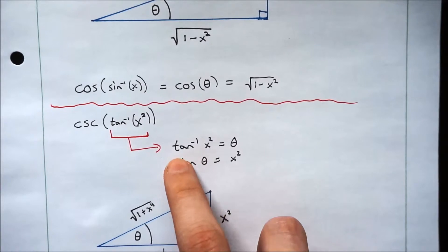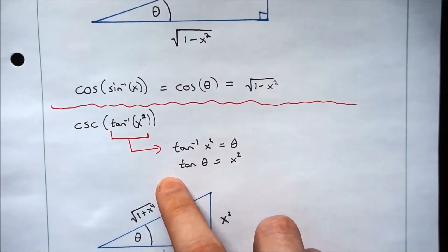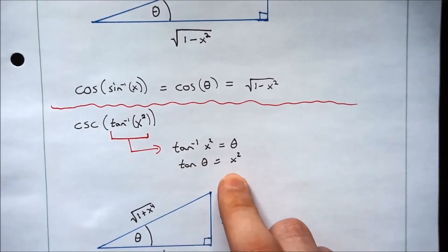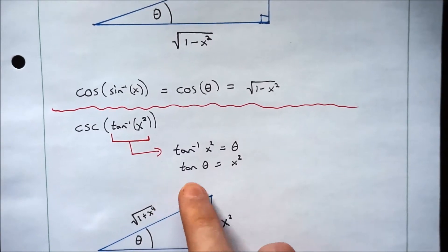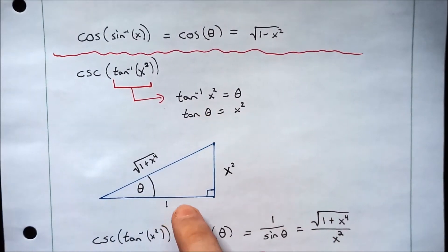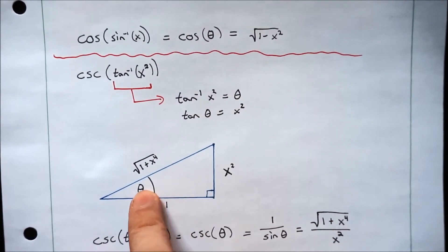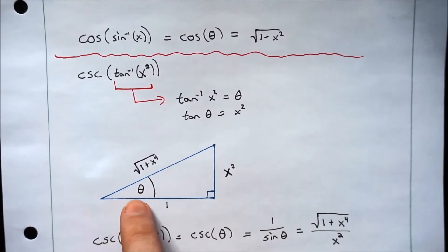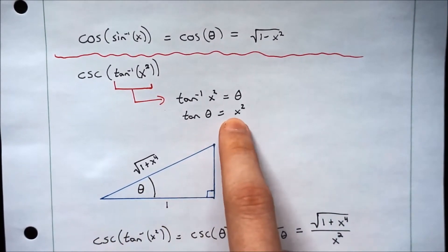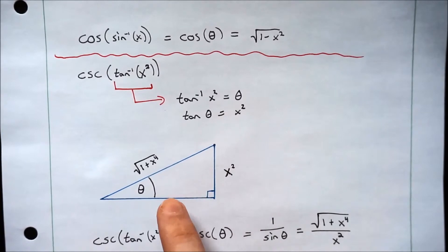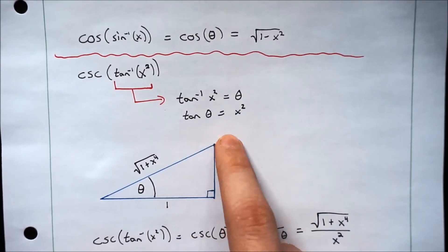So we have arc tangent of x squared is theta. So that means the tangent of theta equals x squared. Now we're going to do the same thing. We're just going to put this on a triangle. We've taken our theta and put it here. And we need the tangent of theta to equal x squared. And tangent is opposite over adjacent. So our opposite is x squared, and our adjacent is 1. So that satisfies this.